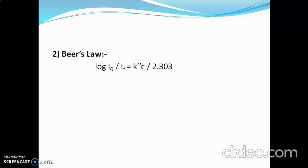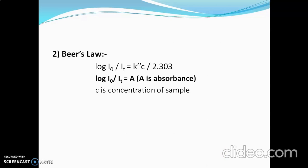The equation of Beer's law is: log(I0/It) = k''c / 2.303, where log(I0/It) is absorbance, c is the concentration of the sample solution, and k'' is the constant. The final equation is A = k''c / 2.303. Beer's law is very important in all types of spectroscopy.